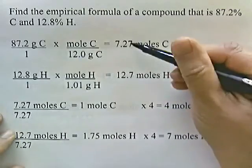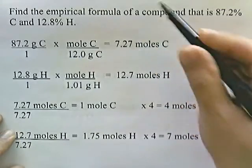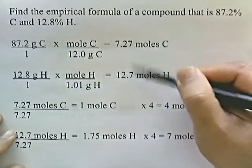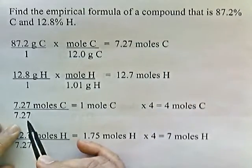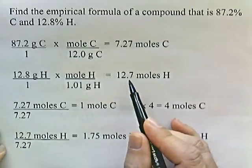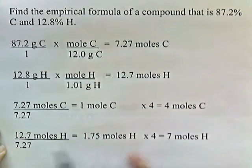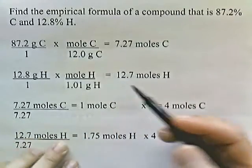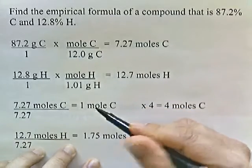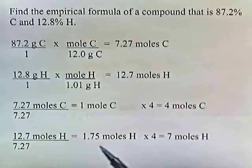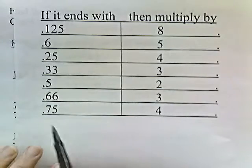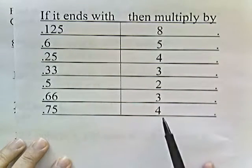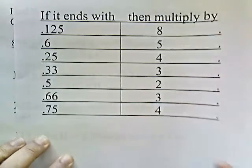The smallest number between these two is 7.27. So we're going to divide both of these numbers by 7.27. If we do that, 7.27 divided by itself is 1. And then 12.7 divided by 7.27 gives us 1.75. So the ratio of moles is 1.75 to 1. But we want whole number ratios. Well, let's see. 0.75 on our little if-then chart, if it ends in 0.75, we'll multiply everything by 4. So if we do that, we should get whole numbers.